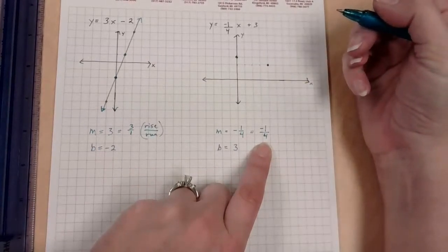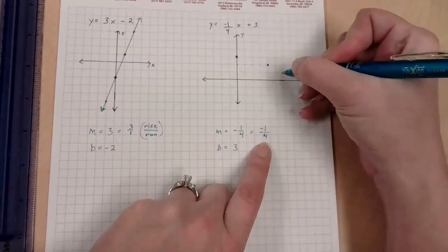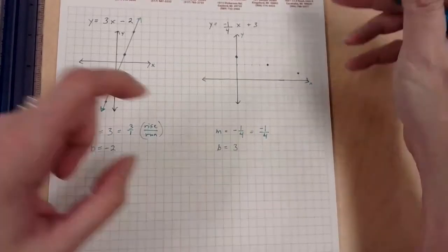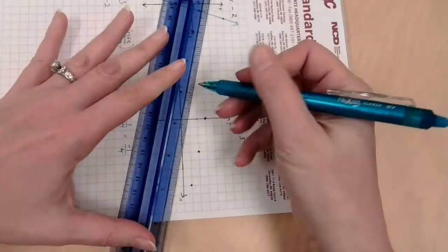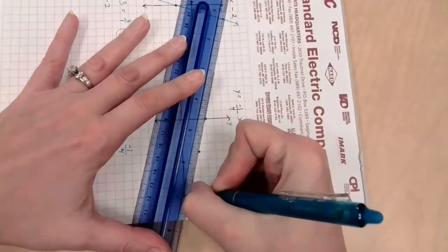That's my second point. That's enough to make my graph. I can keep repeating that pattern. I can fall one and run one, two, three, four again. That'll work if I want to get a couple more points.